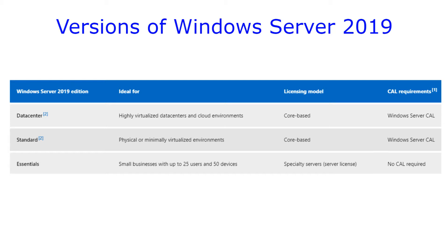Standard Edition is the most common, and that's what you're going to find running in most medium to large enterprise businesses. This is also licensed per core of the hardware you're installing it on, and gives you all of the typical features that you need. Lastly, there's Essentials, which is mainly for small businesses with a small footprint, and it's about half the price of the Standard Edition.